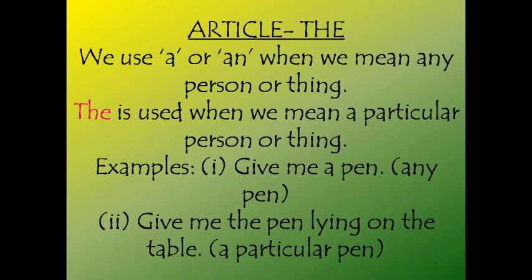We use a or an whenever we are talking about any person or anything in general. But it is completely opposite with the, which is a definite article — we use the when we are speaking about a particular person or thing. For example, 'give me a pen' — it can be any pen, not a particular one. Whereas 'give me the pen lying on the table' — here we are specifying which pen we are talking about, so we use the.